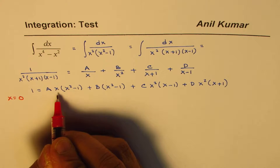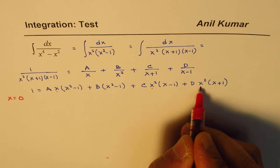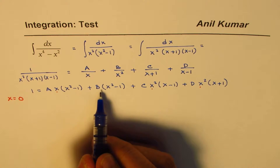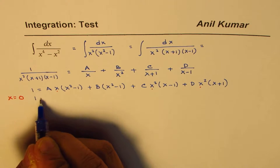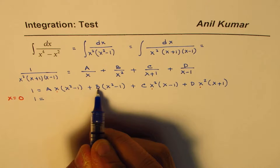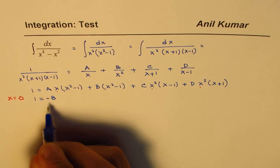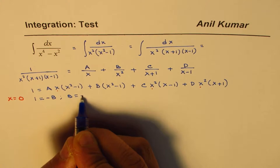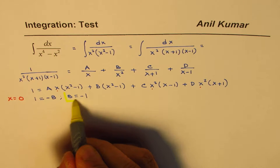If I substitute x equals 0, then the A term, C term, and D term all become 0. I'm left with the B term: 1 equals B times (0 minus 1), which gives 1 equals minus B. So b equals minus 1.